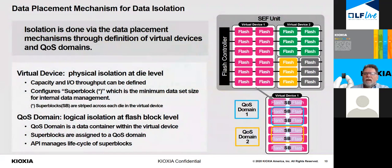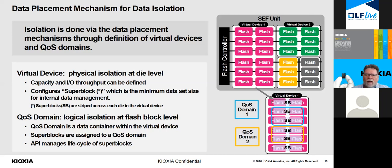This describes how virtual devices and QoS domains provide control over data isolation and data placement. Superblocks within a virtual device start out in a free pool. As QoS domains allocate storage, a block is drawn from the free pool and assigned to the domain. The device can choose any free block from the pool, tracking block wear and health to assign the optimal block for maximum device endurance. Superblocks are never shared between domains — there is no mixing of data at the block level. Once a superblock is released, it's returned to the free pool, so ownership may change several times over the device's lifetime.